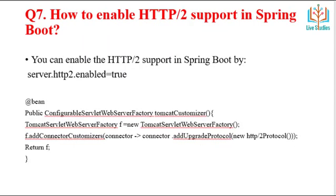Next question: how to enable HTTP/2 support in Spring Boot? You can enable HTTP/2 support by setting server.http2.enabled=true in the properties file. Programmatically, you can also create a TomcatCustomizer class, create a reference of TomcatWebServerFactory, add a connector, customize the connector by adding the HTTP/2 upgrade protocol using new Http2Protocol(), and then return the value to enable HTTP/2 requests.